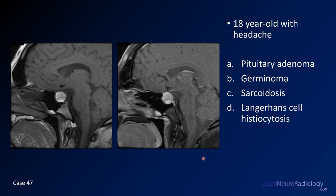Case number 47 is an 18-year-old presenting with headache. Two images — pre and post-contrast. It's key to recognize that the first image is pre-contrast. The choices are pituitary adenoma, germinoma, sarcoid, or Langerhans cell histiocytosis (LCH).